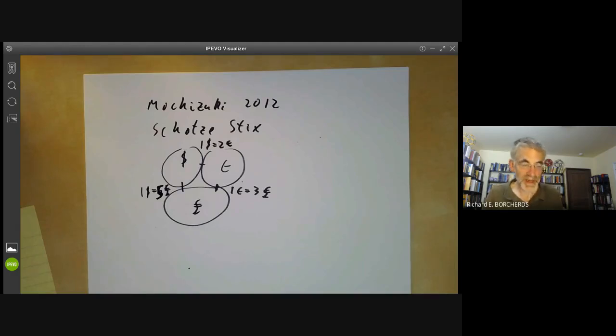So what's the key idea in Mochizuki's proof? And as far as I can figure out, no one seems to know. No one has been able to explain, give some simple summary of what is going on.